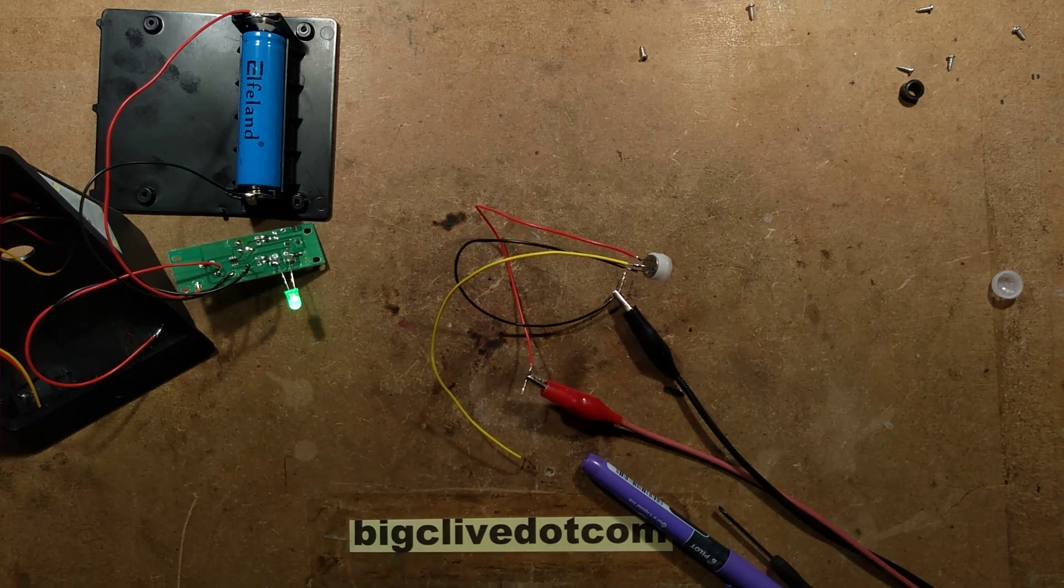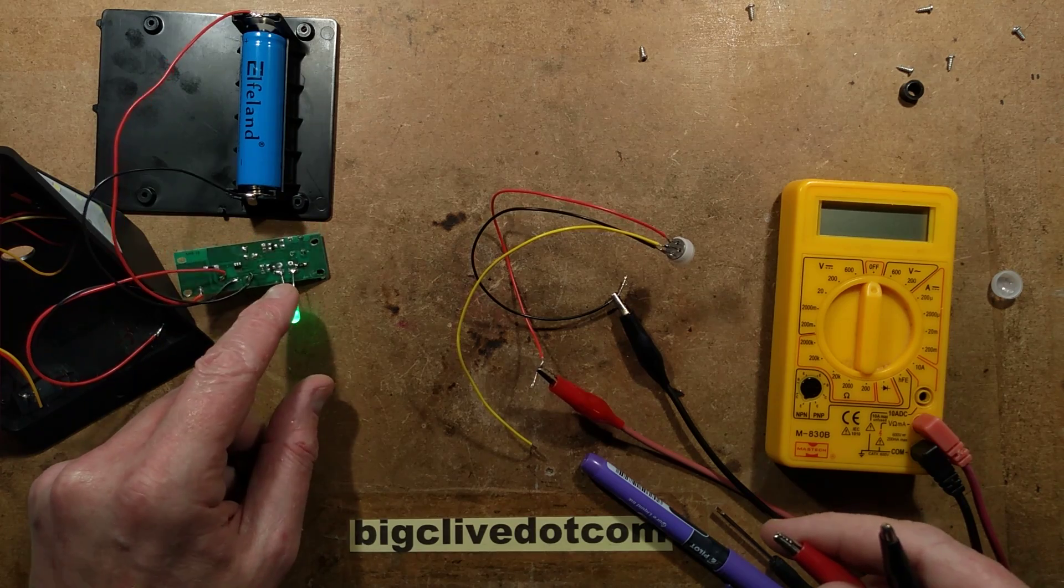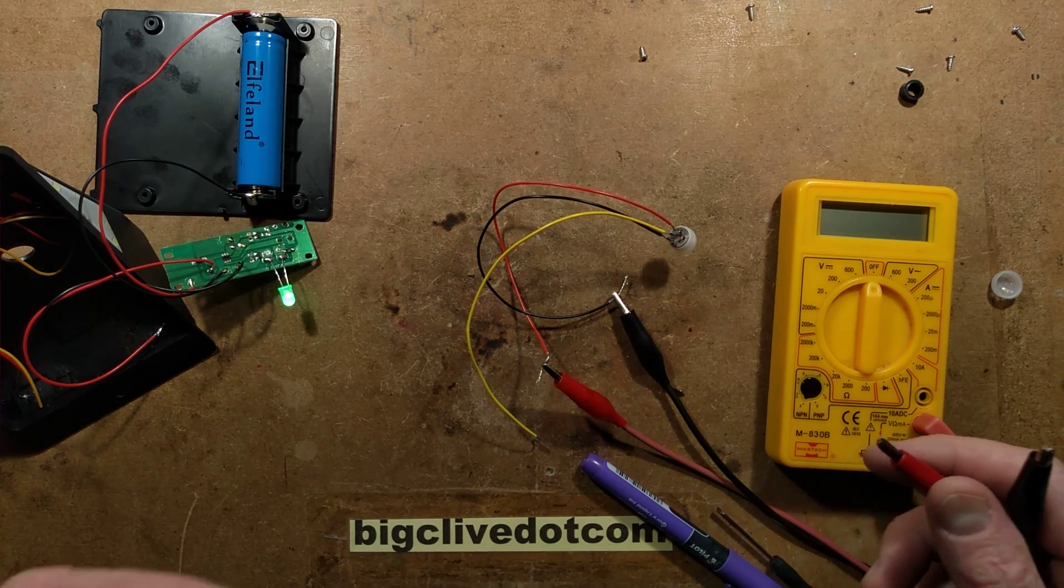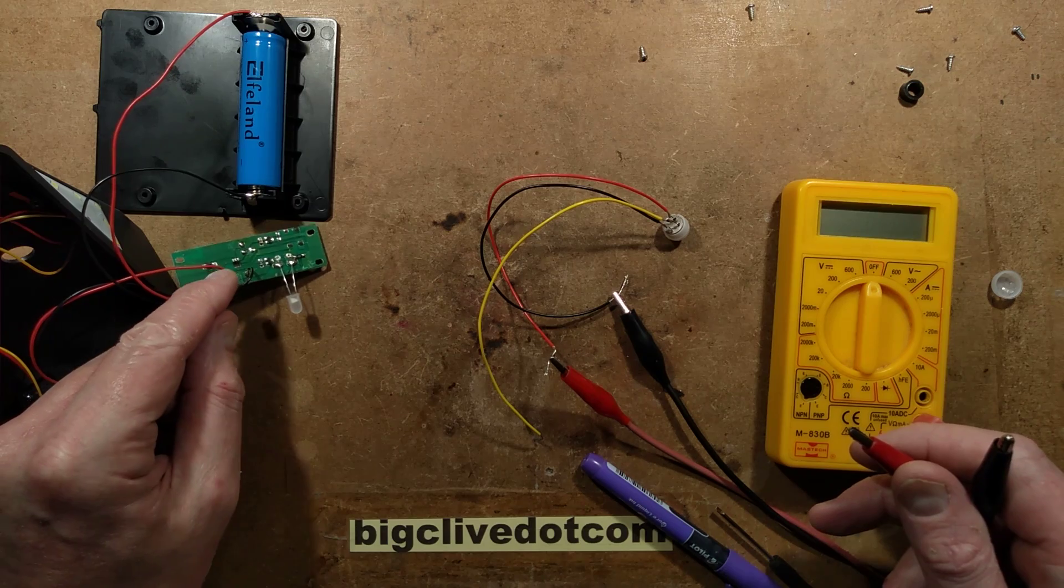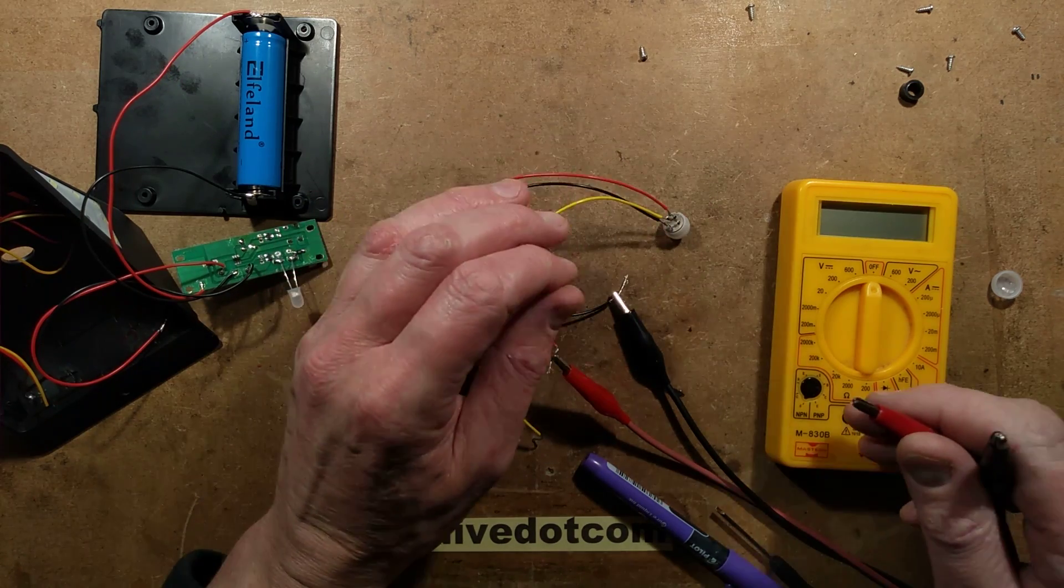We've got the negative, we've got the signal in, we've got a positive. If I bridge the positive to the input of the microcontroller, it just completely ignores me and doesn't trigger. It kind of triggered. That's quite odd that it's actually triggering on and off from that. It does kind of trigger. So let's take a look at the sensor itself because that is quite interesting.